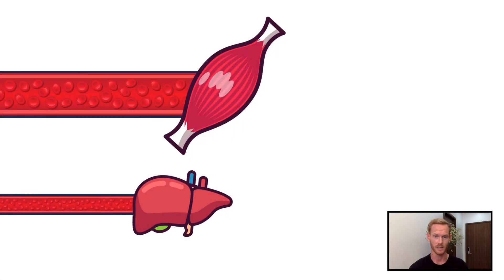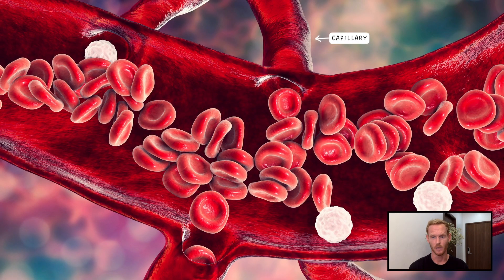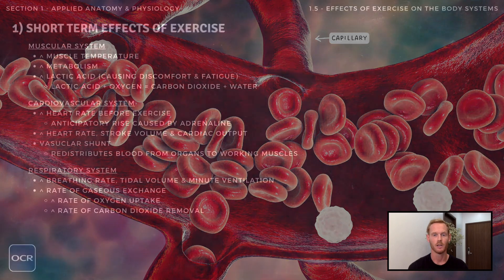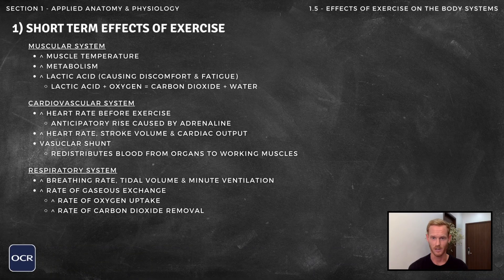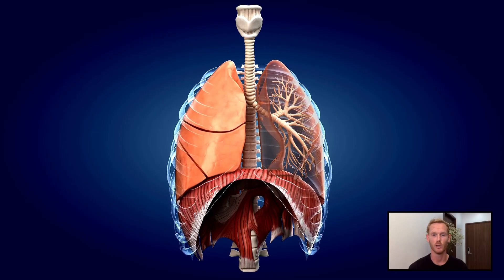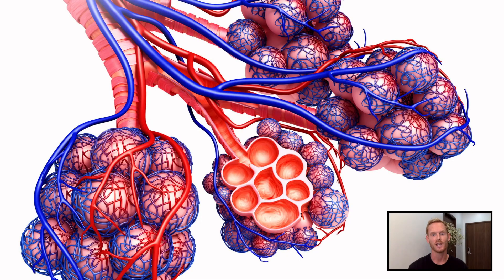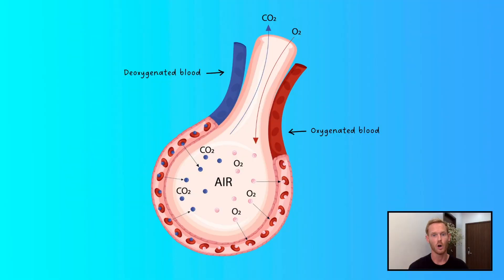The arterioles or small arteries which supply the muscles experience vasodilation, where their diameter increases, accelerating the flow of blood to these areas. At the same time, arterioles distributing blood to low priority areas, for example the liver, experience vasoconstriction, where their diameter decreases and blood flow is reduced. The entrances to the capillaries, called pre-capillary sphincters, also vasodilate and vasoconstrict, diverting even more blood to the muscles. The respiratory system also adapts during exercise; breathing rate, tidal volume and minute ventilation all increase, meaning more oxygen is drawn into the lungs, accelerating gaseous exchange in the alveoli and allowing more oxygen to diffuse into the bloodstream and carbon dioxide to diffuse from it.